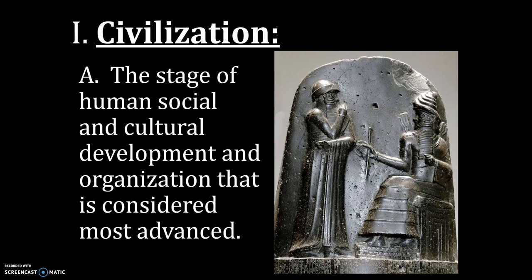When we last spoke we were talking about Paleolithic people, and then we talked about the transition to Neolithic people. One consequence of settling down and farming is that we can develop these elements that we call civilization. Let's take a look at some of these.